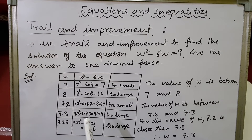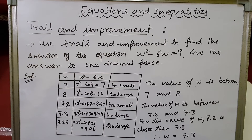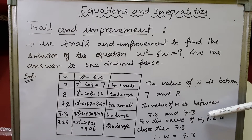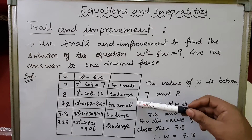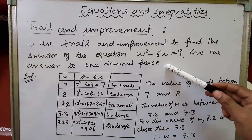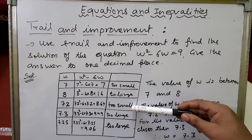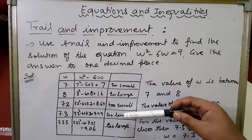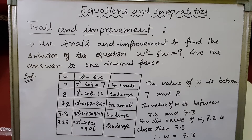Now we can see that the value at w = 7.2 gives 8.64 and w = 7.3 gives 9.49. We know that w lies between 7.2 and 7.3. Since we have to give the answer to one decimal place, the result at 7.2 is closer to 9 than the result at 7.3, so the solution will be w = 7.2.